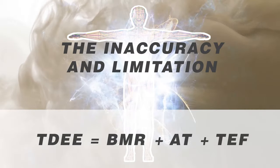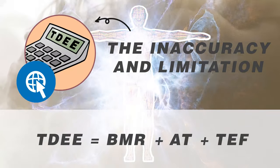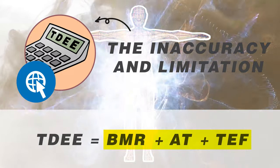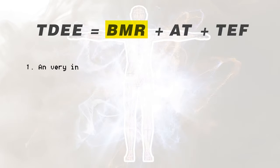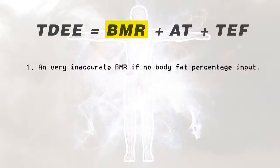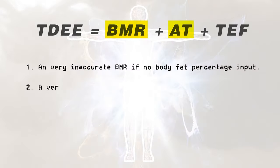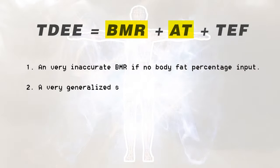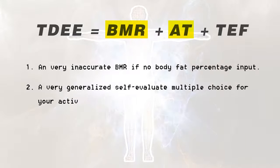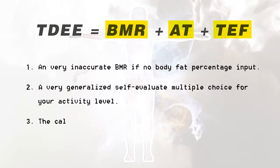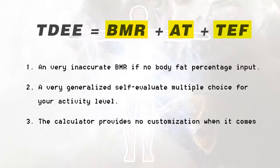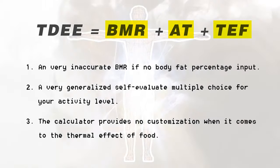The inaccuracy and limitation of this method comes from all three parts. First, a very inaccurate BMR if there is no body fat percentage input. Second, a very generalized self-evaluated multiple choice for your activity level. And last, the calculator provides no customization when it comes to the thermal effect of food.